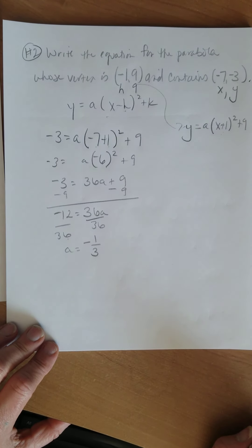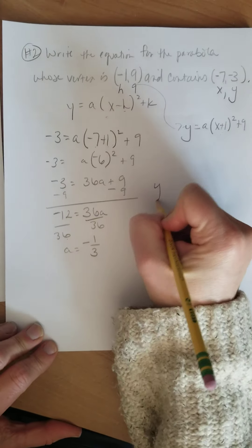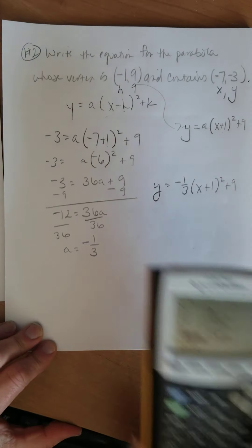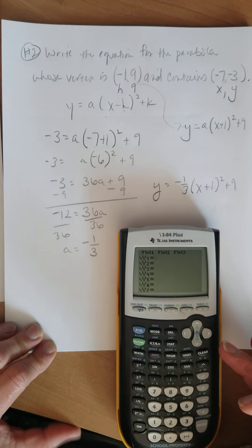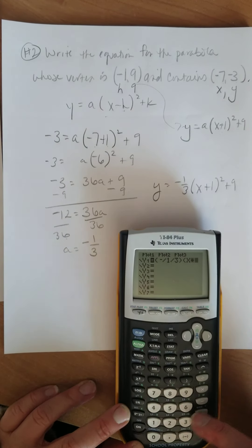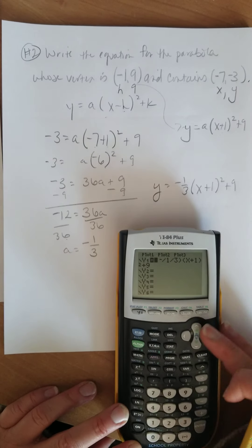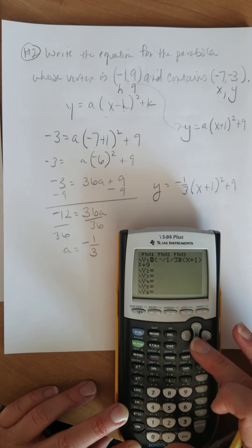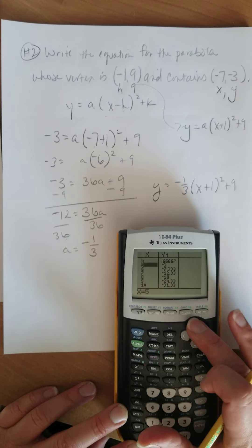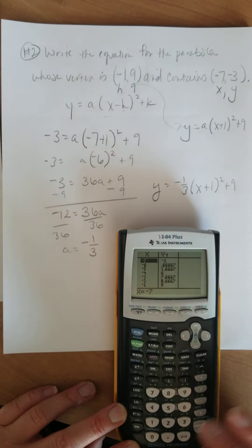Negative one-third is 0.3 repeating — I would not use that decimal at all. The equation is y equals negative one-third times the quantity x plus one squared plus nine. Let's check: I should have a point at (−1, 9) — yes. And I should have one at (−7, −3) — yes. There you go.